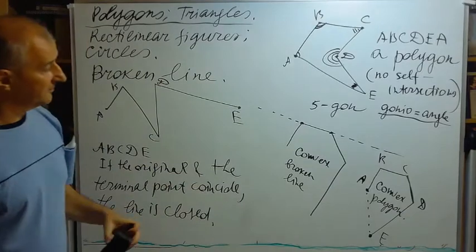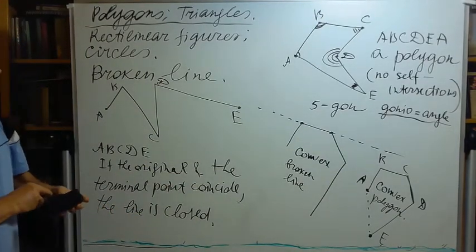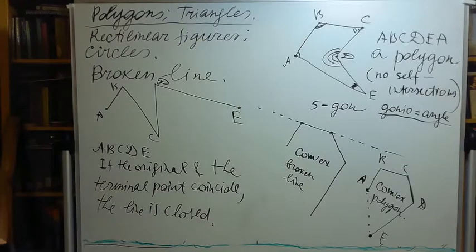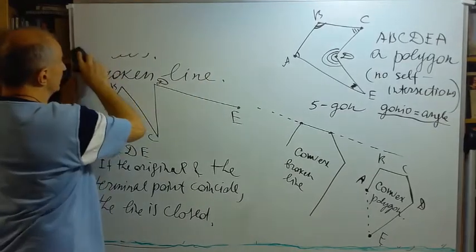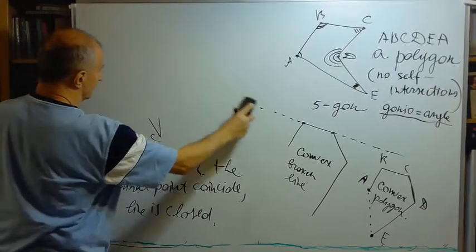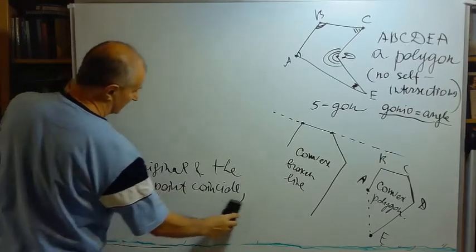You can prove that this definition we applied for convexity coincides with the definition that we have given earlier, that any segment within the convex figure lies entirely within the convex figure. There is a problem about it in the textbook, so please consider it and solve it. If you cannot solve it, you can find the solution, I'm pretty sure, either at the end of the textbook or in the solution manual.